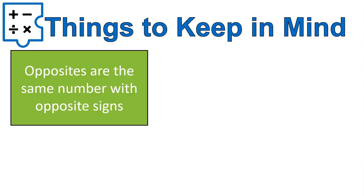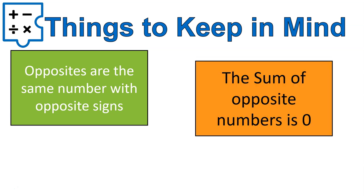A couple of things to keep in mind: opposites are the same number with the opposite sign, and when you add opposites your result is zero. So the sum of opposite numbers is zero. I hope that lesson has been fun and helpful for you. Have a wonderful day.